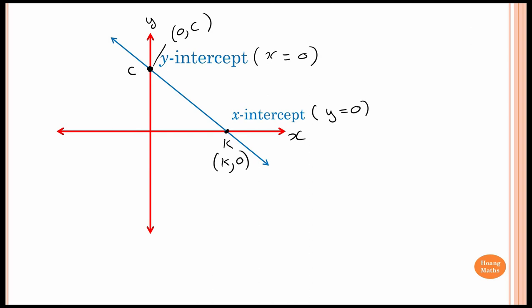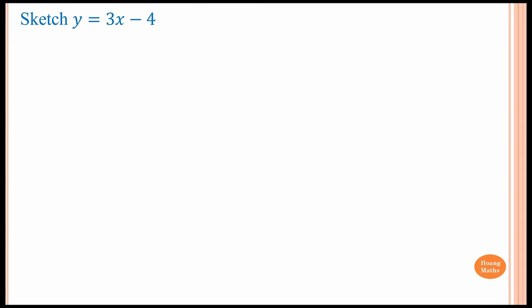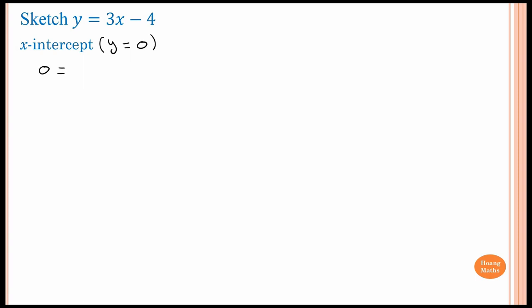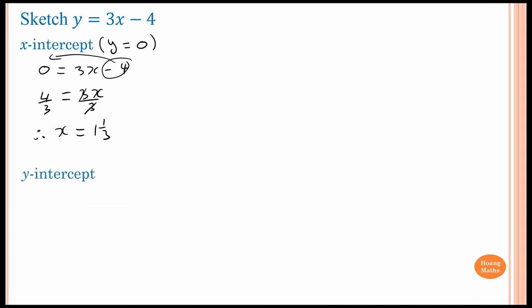Let's do a few examples. First one: sketch this graph. We can find the x-intercept first. To find the x-intercept, y is equal to zero. So when y equals zero, we solve the equation: 0 = 3x - 4. Move the -4 to the other side: 4 = 3x. Divide both sides by 3, so x is equal to one and a third.